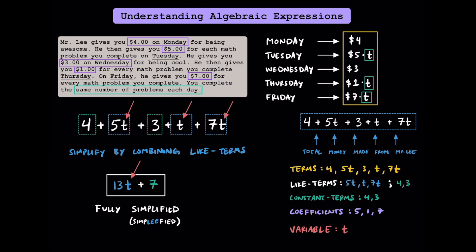Remember, t doesn't have to be 5. If you did 10 problems a day, or 7 problems a day, or 100 problems a day, substituting any of those values in for t will get you the total amount of money you would make. Now that we went over a quick overview, let's get into some practice problems together.